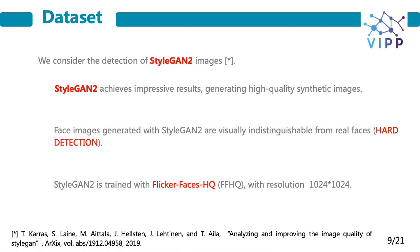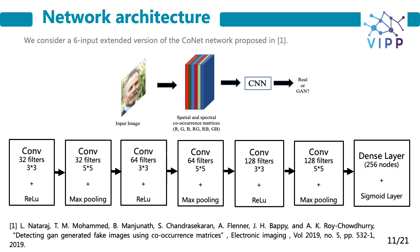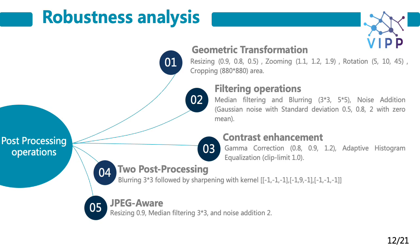The dataset used to train StyleGAN is the Flickr Faces FFHQ database. This figure shows some examples of StyleGAN version 2 real face images from the FFHQ database and examples of images generated using StyleGAN version 2. Regarding the architecture, we consider the same structure already used for GAN image detection: the network consists of 6 convolutional layers followed by a single fully connected layer. The only modification regards the first layer, since in our network we have a 6-band input instead of 3.